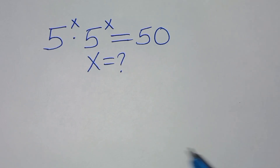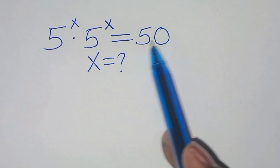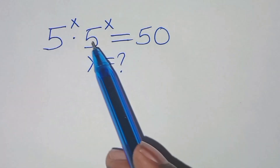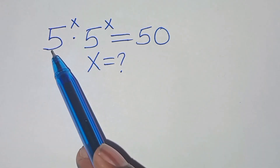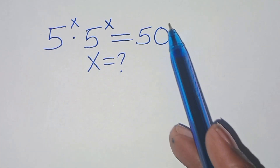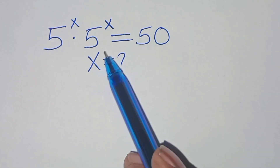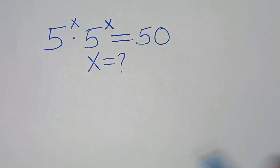Hello everyone, you are welcome to solve this nice exponential equation, which is 5 to the power x times 5 to the power x, and this is equal to 50. What is the value of x?